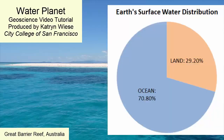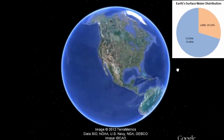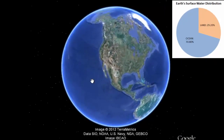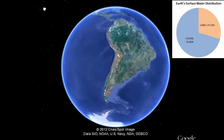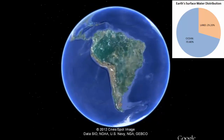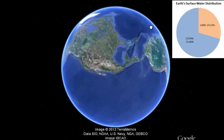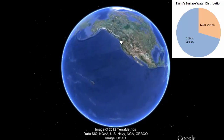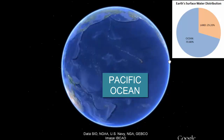Earth is a water planet. Over 70% of the surface is covered with water in a series of interconnected basins creating one world ocean. This rotatable sphere shows how this world ocean is distributed across the globe. The largest basin within the world ocean, representing 50% of it, is the Pacific Ocean, which sits between Asia, Australia, and the Americas.